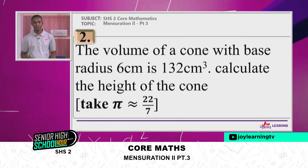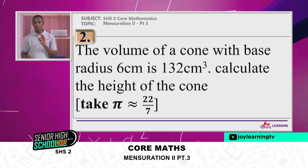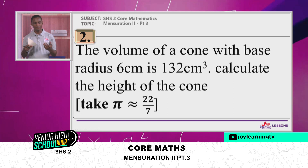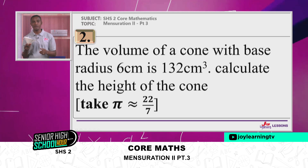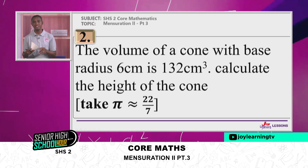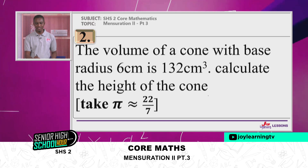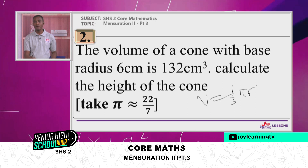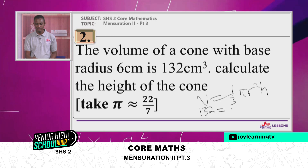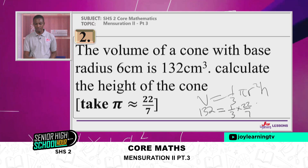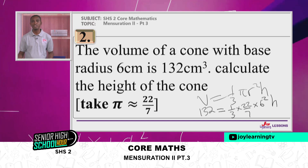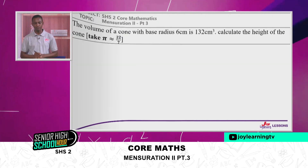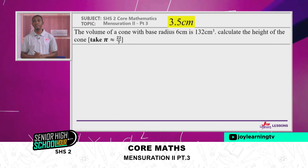Example number two: the volume of a cone with base radius 6 centimeters is 132 cm³. Find the height of the cone. We use V = 1/3 × π × r² × h. The volume is given as 132, pi is taken as 22/7, and the radius is 6. We make H the subject and solve. When you do the calculation, you get the height as 3.5 centimeters.